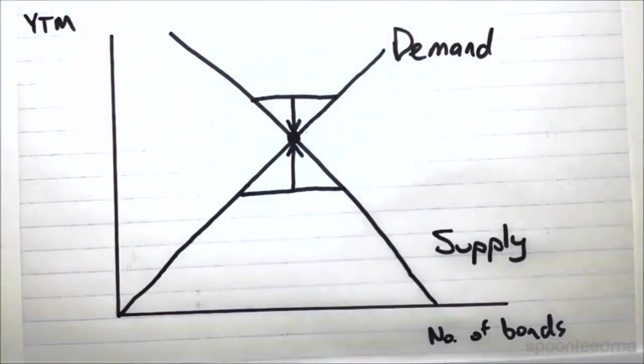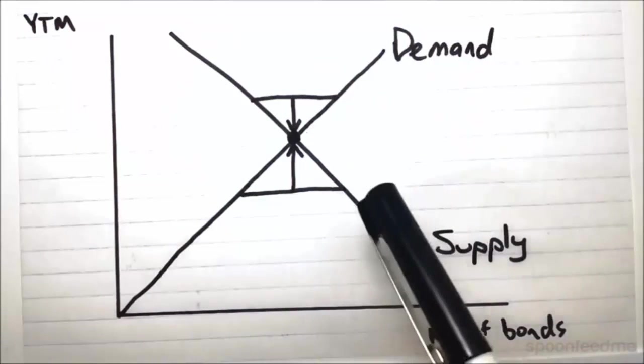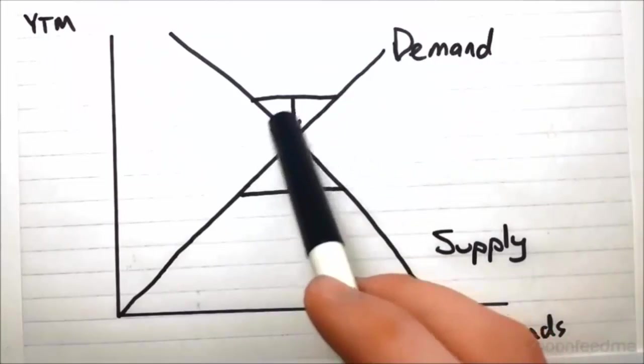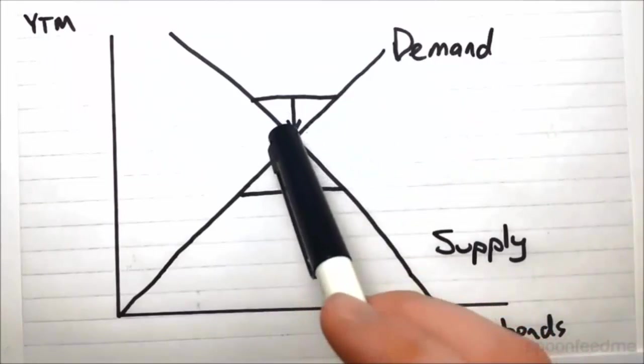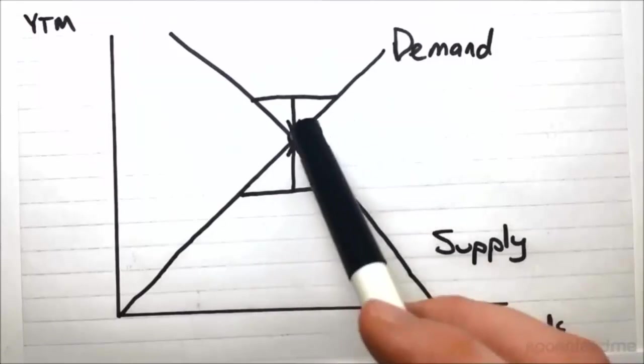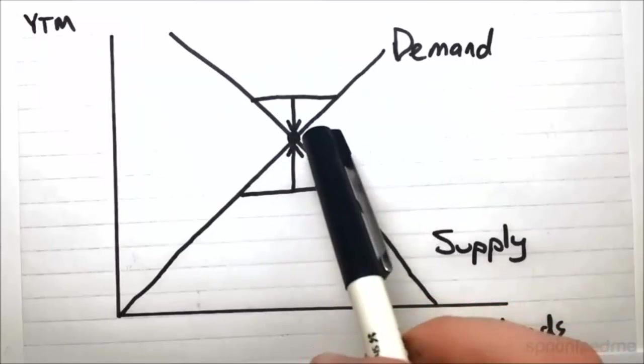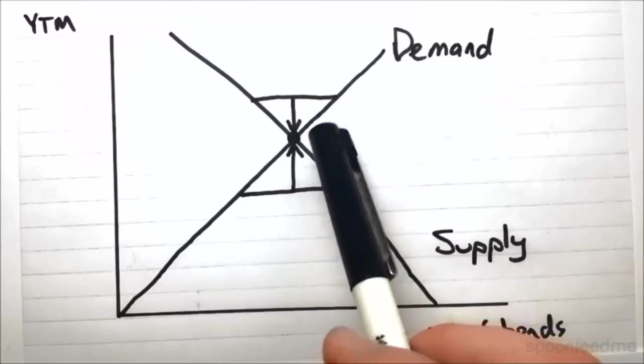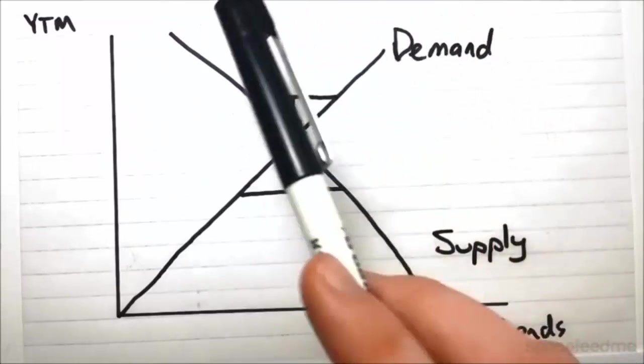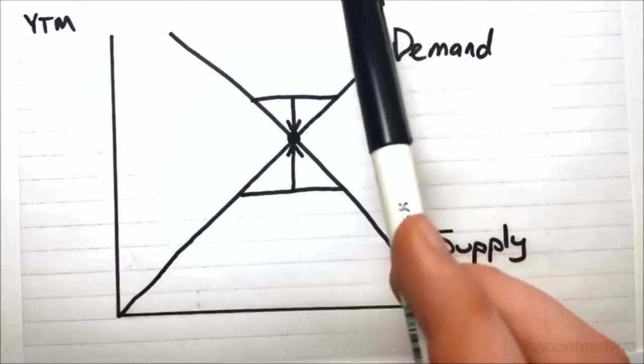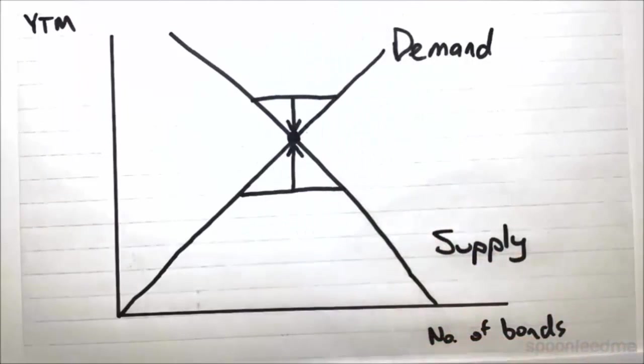And so in this manner, the market decides on what the yield to maturity on bonds is going to be. And then from that yield to maturity, the price can be determined through the equation between price and the other factors and yield to maturity. And we're going to look at how that works in the next video.